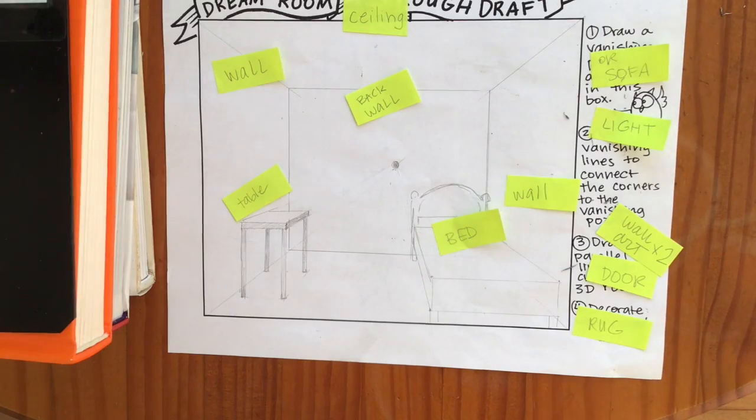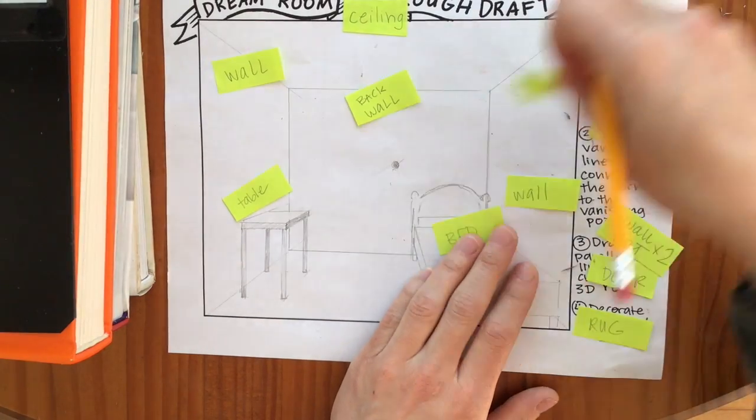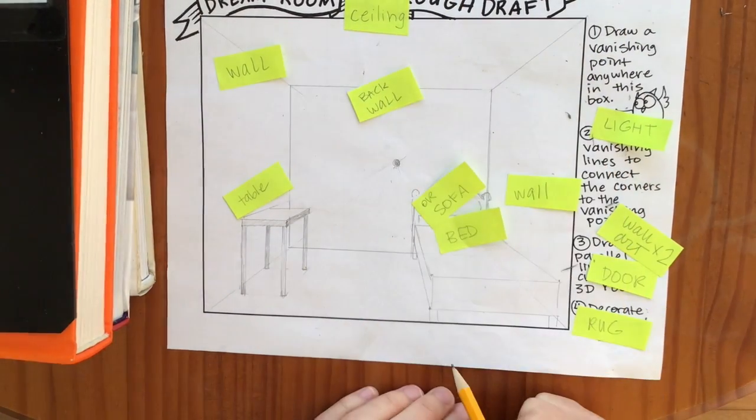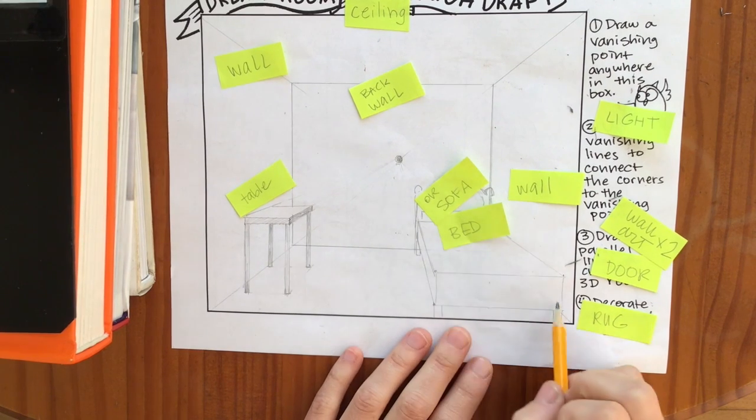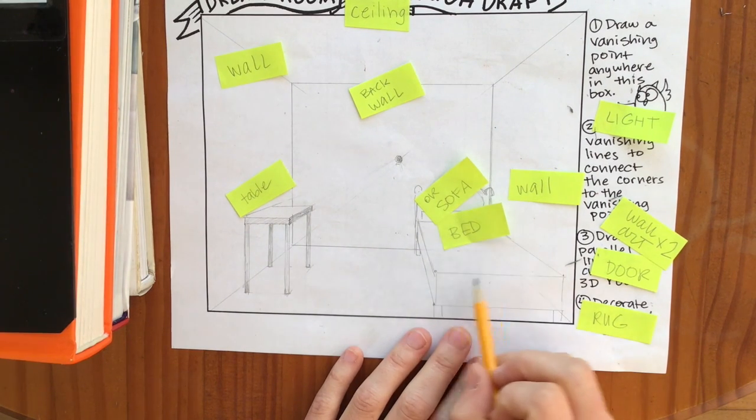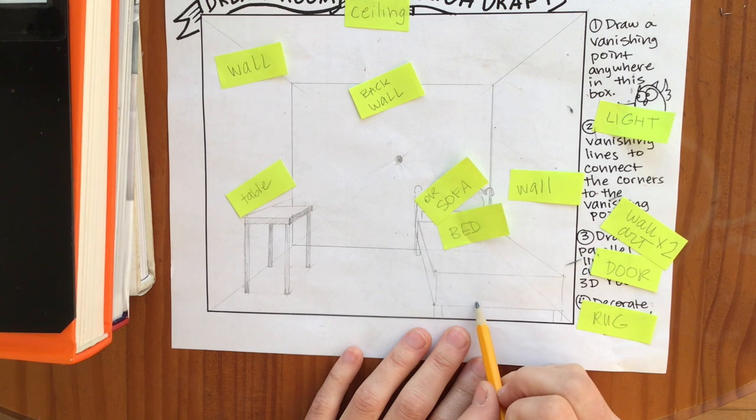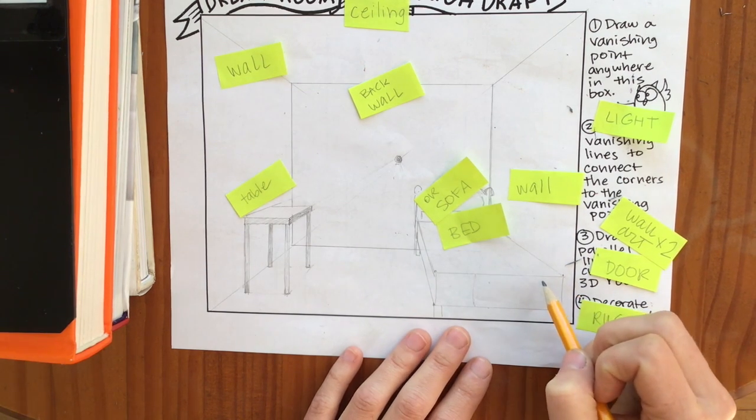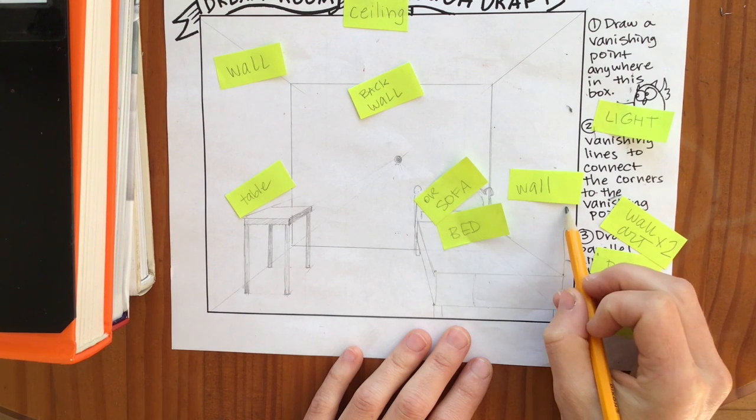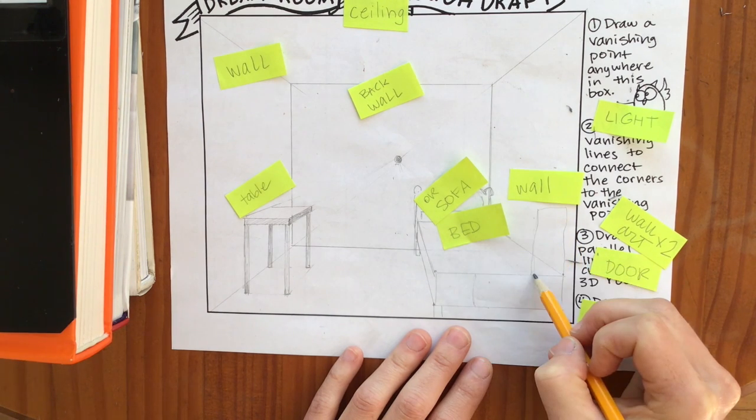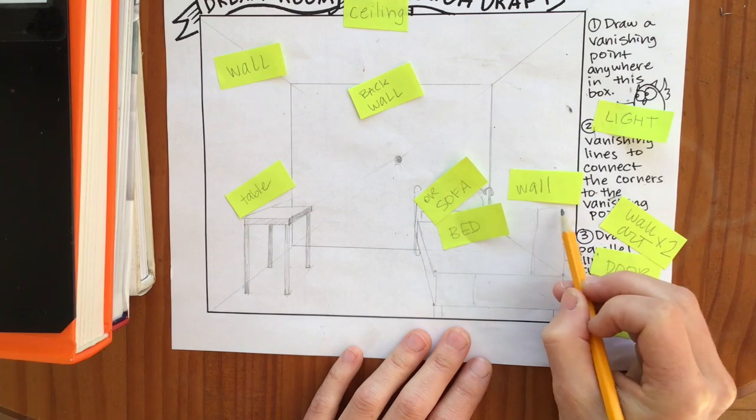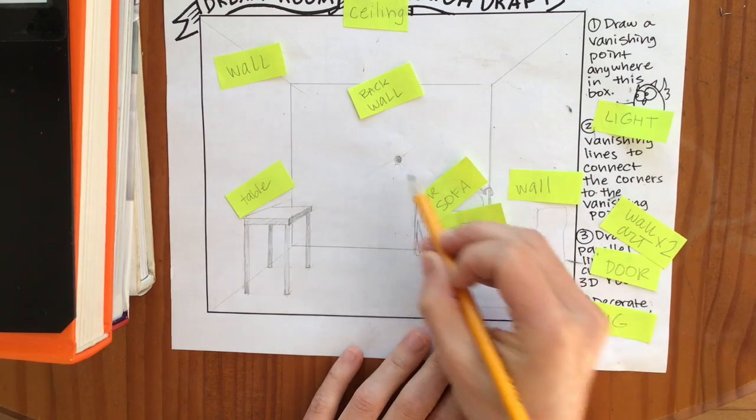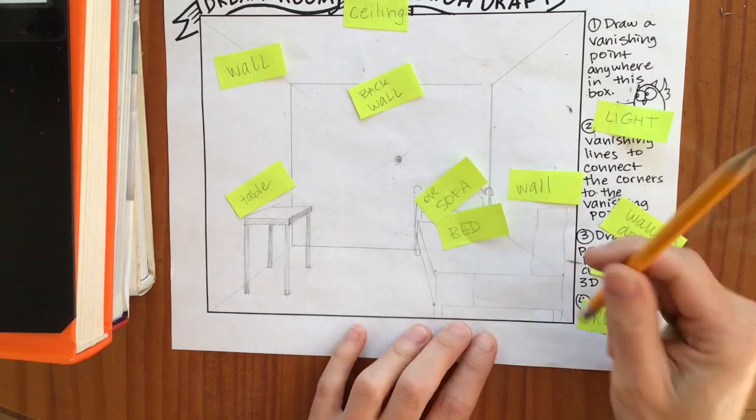If you wanted to make your bed a sofa instead, because that is an option, you start almost the same way. So you're going to be making your rectangle. You'd probably make it a little bit shorter. And then the only thing different you would add is you look at the side of the sofa. Kind of got the back part like this. You would have that. And then these lines, these points, would also connect to the vanishing point.